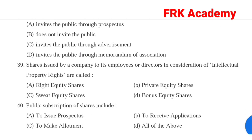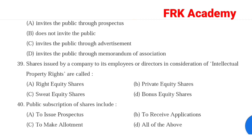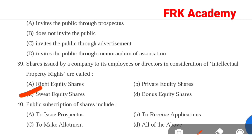Question 39: Shares issued by a company to its employees or directors in consideration of intellectual property rights are called. Answer: Option C, sweat equity shares. Sweat equity shares are issued to employees or directors in consideration of intellectual property rights.